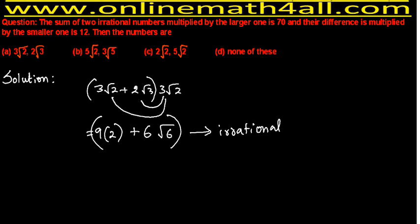Students, please remember: if we have two unlike radicals that are irrational numbers, finding their sum and multiplying by the larger one will always give an irrational result. But in our question, the result must be the rational number 70. Since these two irrational numbers are unlike radicals, the result can never be rational. So Option A is definitely not correct.